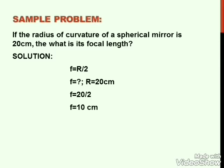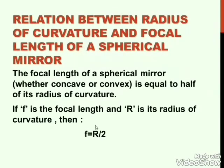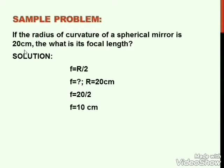We will solve one problem using this formula: f = R/2, where f is focal length and R is radius of curvature. If the radius of curvature of a spherical mirror is 20 centimetres, then R = 20 cm. Placing the value: f = 20/2 = 10 centimetres. So the focal length of this spherical mirror is 10 centimetres.